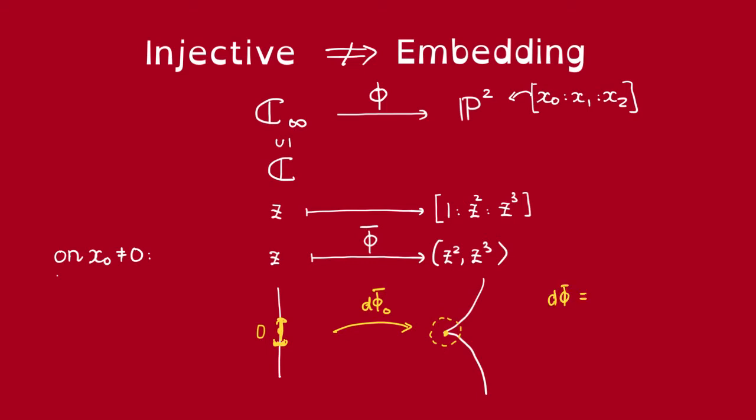So observe that the Jacobian of this map is just going to be 2Z, 3Z squared. So at the origin, at the point 0, this is just the map [0, 0], so it's not injective, its rank is less than 1. Observe that the problem is that the order of vanishing at the origin of both of these coordinate functions is greater than 1. That's the main obstruction.